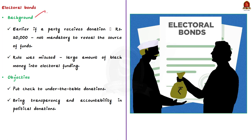Before the introduction of electoral bonds, if a political party received a donation of less than Rs 20,000 from a donor, it was not mandatory to reveal the source of funds. This rule was misused by all political parties — they claimed 90% of their political funds came in denominations of less than Rs 20,000. Due to this, a large amount of black money went into electoral funding and was used in election campaigning.